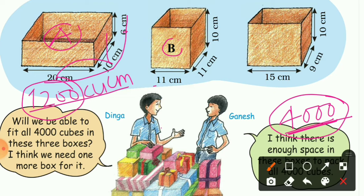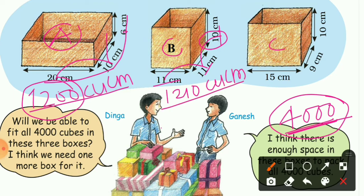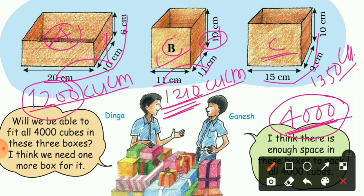For Box B, its dimensions are 11 × 11 × 10. Volume = 11 × 11 × 10 = 121 × 10 = 1210 cubic centimetres. Box B is also not enough. For Box C, dimensions are 15 × 9 × 10. Volume = 15 × 9 × 10 = 135 × 10 = 1350 cubic centimetres. Box C is also not enough.